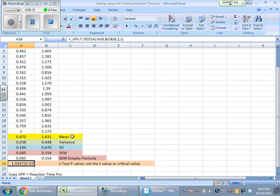You can see down here I've got the mean in yellow, the variance in green, the standard deviation in blue, the standard error in red, and here in orange I have the t-test.